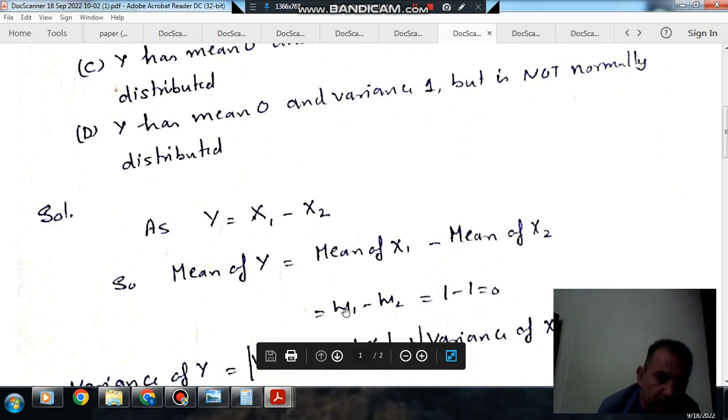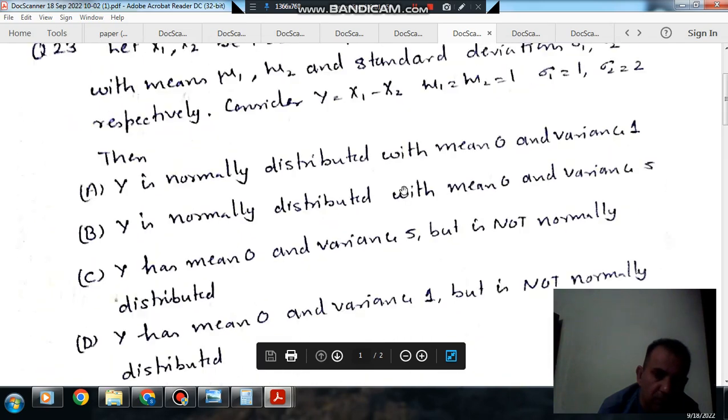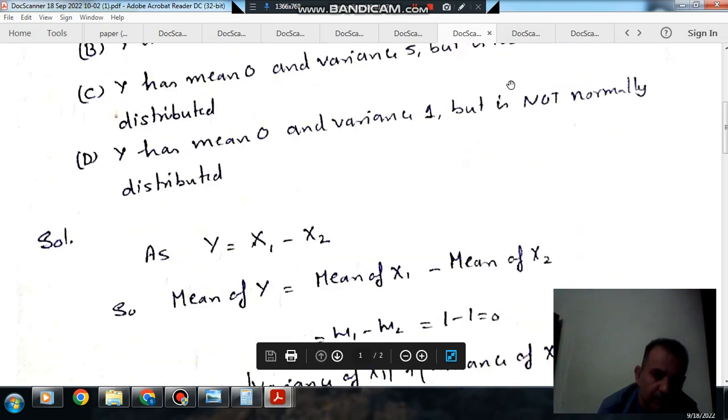So mu1 minus mu2 should be the mean of Y, or 1 minus 1, which equals 0, should be the mean of Y because mu1 and mu2 are both 1.